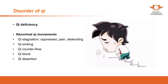Qi can be separated into yin and yang — essence can generate qi, and qi can be divided into yin and yang. That's the relationship between essence, qi, yin, and yang. Qi deficiency can therefore be yin qi deficiency or yang qi deficiency: yin qi deficiency can reflect into heat, while yang qi deficiency can reflect into coldness. This connects with the study of yin and yang impairments from the previous video.